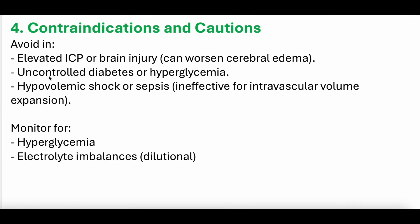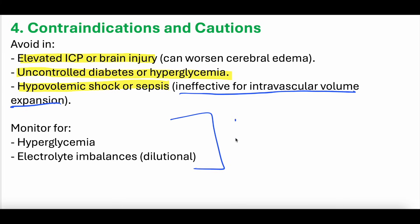Contraindications and cautions: avoid using in those with elevated ICP — it's hypotonic, so fluid travels into the cells, and you don't want fluid going into swollen intracranial cells. Uncontrolled diabetes — D5W will increase serum glucose because it has 5% dextrose. Hypovolemia or shock — it does not stay inside the blood vessel; it's an ineffective intravascular volume expander. Monitor for hyperglycemia and electrolyte imbalances, particularly hyponatremia — low sodium. If you notice a patient's sodium keeps falling, check whether they're on a D5W drip.